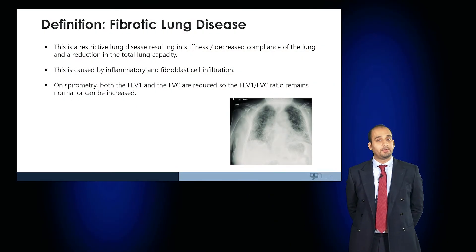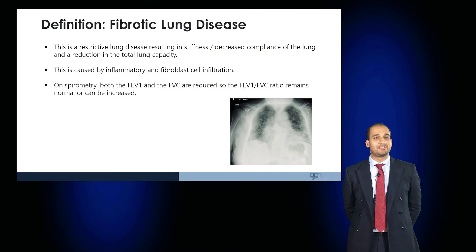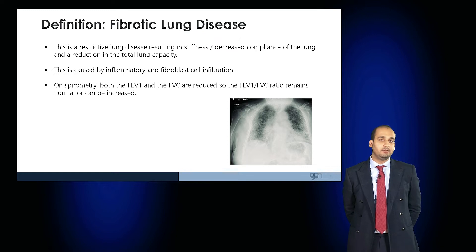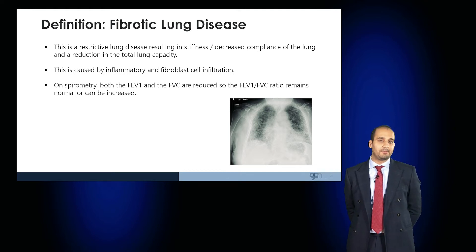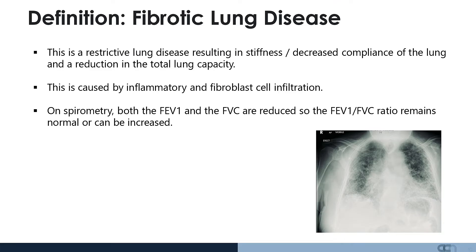Pulmonary fibrosis, or fibrotic lung disease, is a restrictive lung disease which results in stiffness and decreased compliance of the lung and reduces the total lung capacity. This is caused by an inflammatory and fibroblast cell infiltration. On spirometry, both the FEV1 and the FVC are reduced; as a result, the FEV1 to FVC ratio remains normal or can be increased.